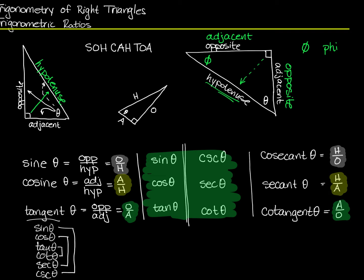Sine, cosine, tangent down one side; cotangent, secant, cosecant up the other. The sine of theta, which equals opposite over hypotenuse, can be thought of as one over hypotenuse over opposite — and that's one over cosecant of theta. I can actually do that with all three of these.